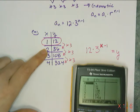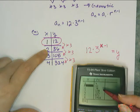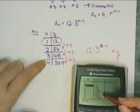And if I go to the table and I scroll down, I look at 1, I get 12. At 2, I get 36. At 3, I get 108. And at 4, I get 324.